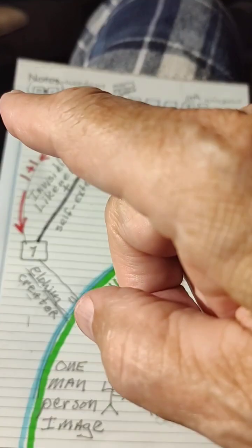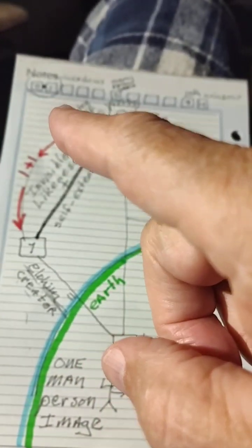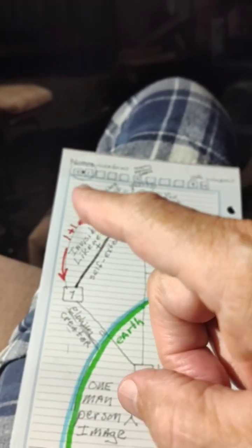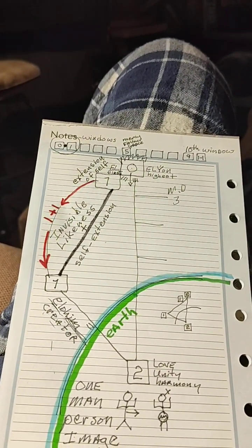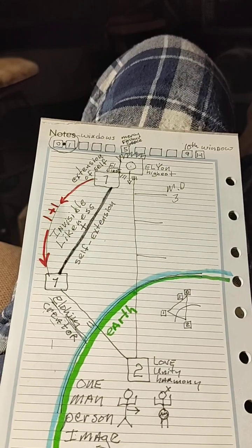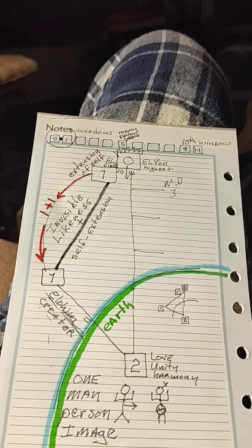And in quantum physics, these windows, you start counting with zero, one, two, three, to five, to nine, which is the tenth window.